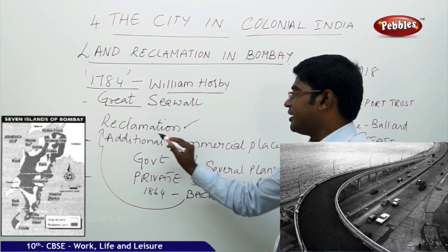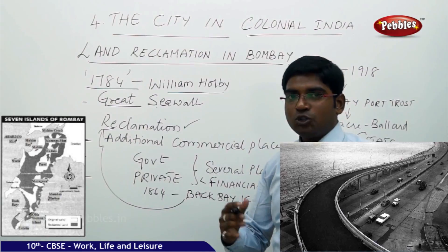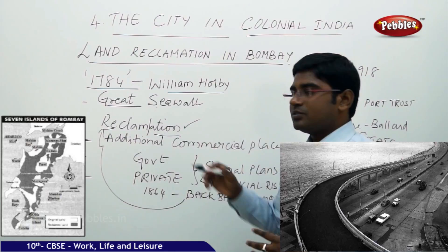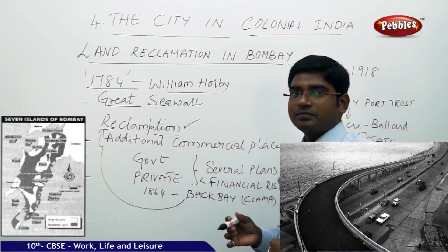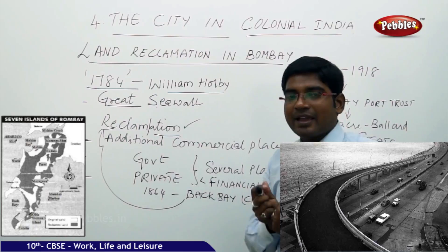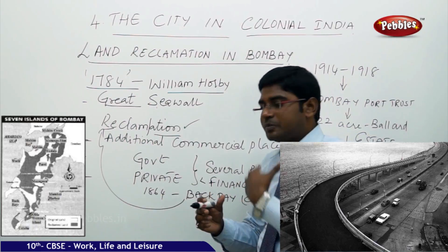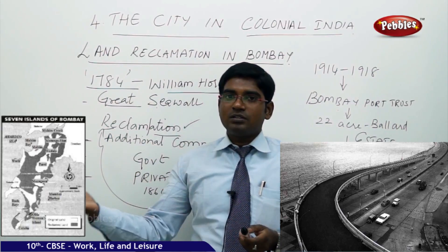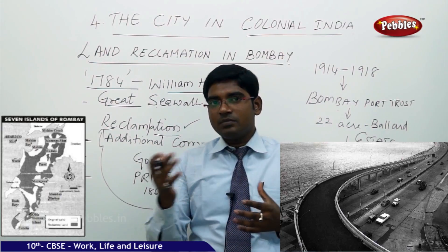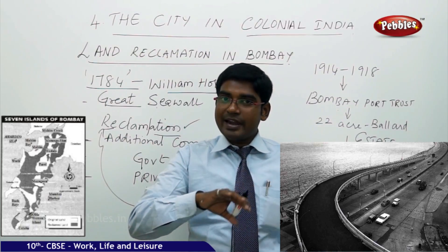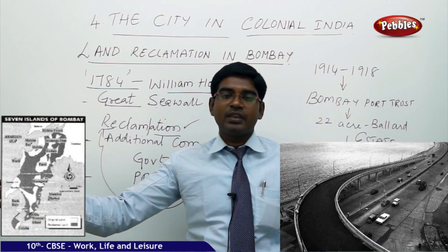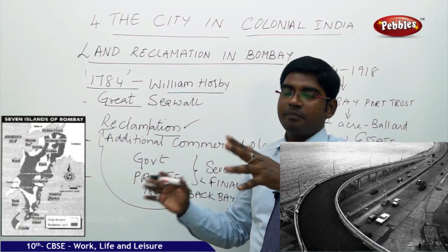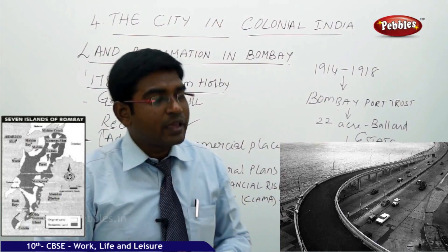We can divide the word: RE means to do something again, CLAIM means to get it back, ACTION. So reclamation — getting back the land which was initially good land. Later, when the sea expanded, it came to this part and brought this land under the influence of the sea. Now we are restricting the influence of the sea by building a Great Sea Wall. That's the process of reclamation.